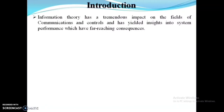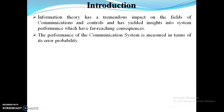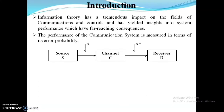Information theory has a tremendous impact on the field of communications and control, and has yielded insight into system performance with far-reaching consequences. The performance of a communication system is measured in terms of its error probability. Here I have shown the general block diagram of a communication system — it contains three blocks: source, channel, and receiver. Capital X represents a set of messages to be communicated. If the exact replica of X is received at the receiver, there will not be any communication problem.